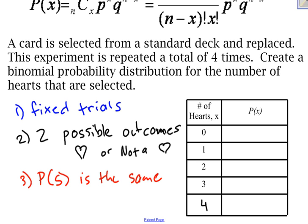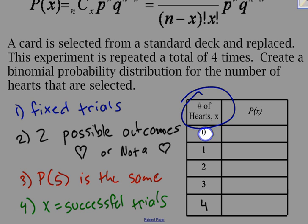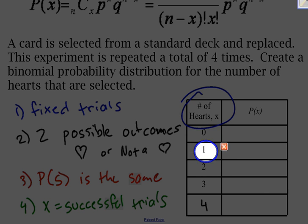Finally, the last condition I need to check is that the random variable X counts the number of successful trials. I can see that the number of hearts is X, and that's the number of successful trials, going all the way up to 4.